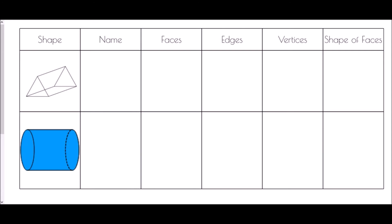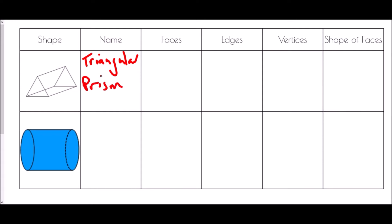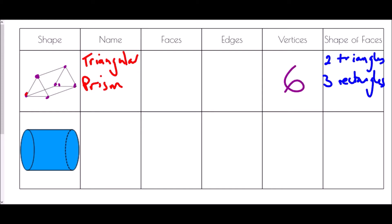Next we have a shape where it is a triangle at the front and it continues all the way through its length — that is a prism. If the shape remains the same throughout its length, it is known as a prism. This is a triangular prism because the cross section is a triangle. A triangular prism has two triangles as its faces — the front and the back — and then the other three faces are rectangles. It has six vertices and nine edges, and five faces in total.